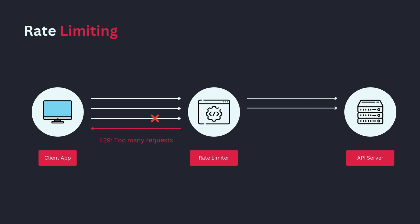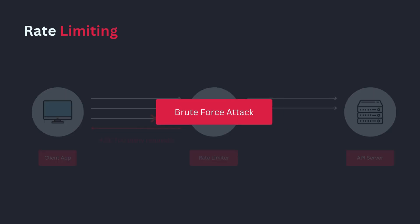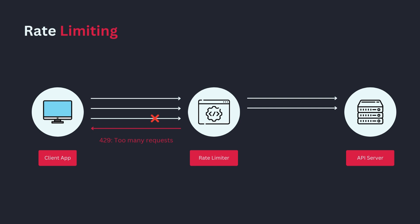Now let's talk about rate limiting, which is an important security feature that every authentication system should have. Imagine someone trying to break into your application by repeatedly guessing usernames and passwords — this is called a brute force attack. Without rate limiting, they could send thousands of requests per second, potentially compromising user accounts and the server. Rate limiting acts as a protective gate that limits the number of requests a user can make to a specific endpoint over a given time.